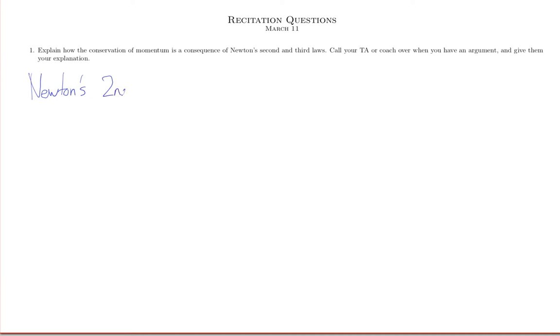So Newton's second law says that the force on an object is equal to its mass times the acceleration that force causes. And Newton's third law says that if objects A and B are pushing on each other, the force that A exerts on B is equal and opposite to the force that B exerts on A.